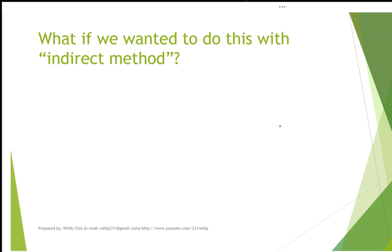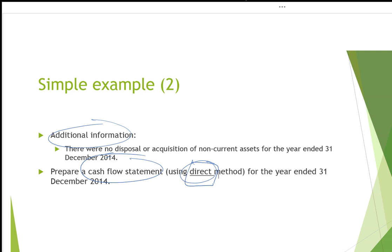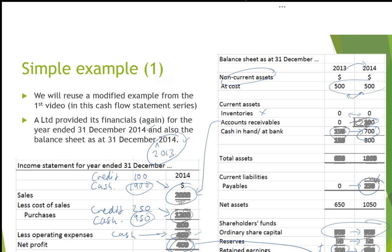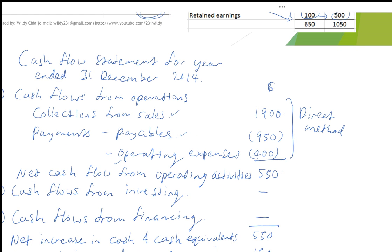The indirect method is a slightly different way to derive operating cash flows. To make it more interesting, let's put the two methods side by side so you can see the contrast. On the left-hand side is the direct method; on the right-hand side I'll present the indirect method. For the indirect method, you likewise need the heading indicating the applicable period.